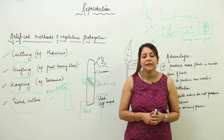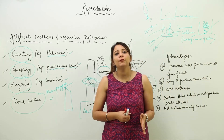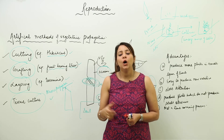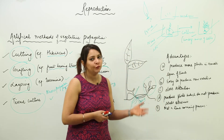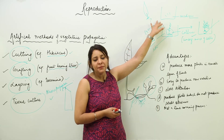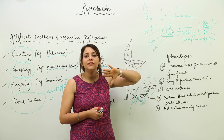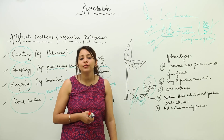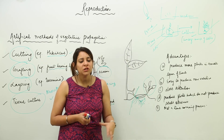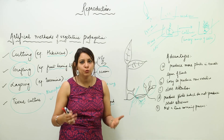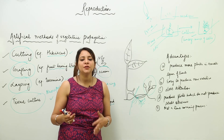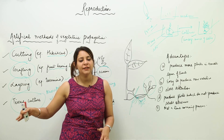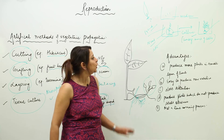Tissue culture can be defined as a method in which a fully grown plant is developed from some isolated tissue. We isolate a few cells or tissues, keep them in a medium where they divide to form an unorganized mass of cells — the callous. We provide nutritive conditions, it develops roots; we provide physical conditions, it develops a shoot; it transforms into a small plantlet and is transferred to a pot to grow into a full plant.